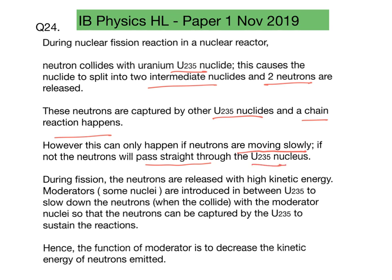During fission, the neutrons are generally released with high kinetic energy, so what you need are moderators — nuclei introduced in between the U-235 — to slow down the neutrons so that they can actually be captured by the U-235.